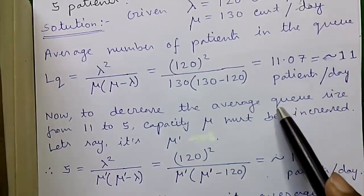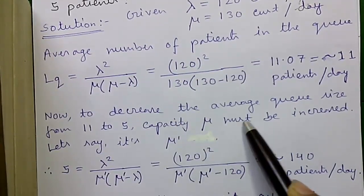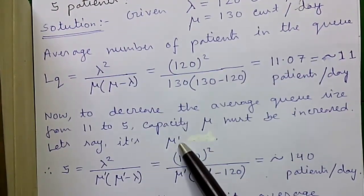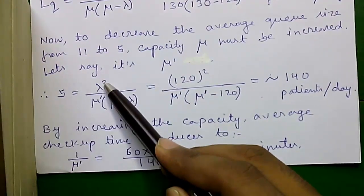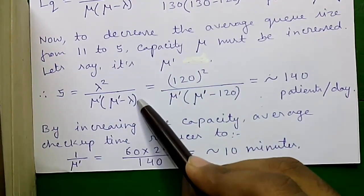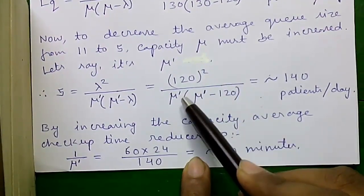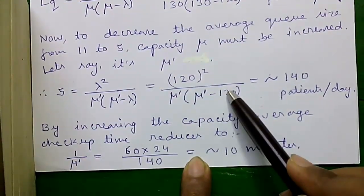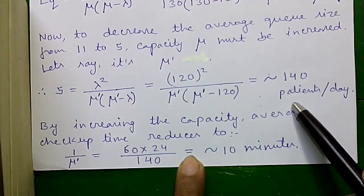Now to decrease the average queue size from 11 to 5, capacity mu must be increased. Let's say it's mu dash. So 5 equals to lambda square divided by mu dash into mu dash minus lambda. That's equals to 120 whole square divided by mu dash into mu dash minus 120. Solving this you will get around 140 patients per day, so the capacity is increased from 130 to 140.